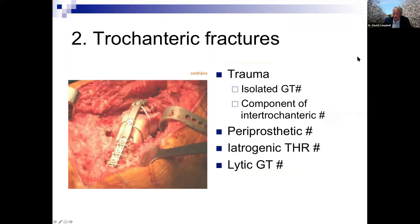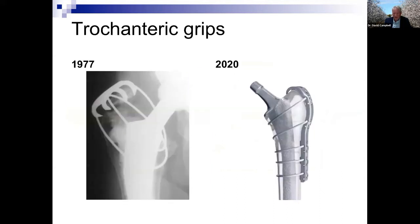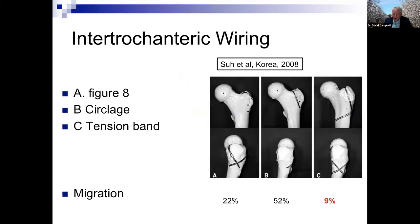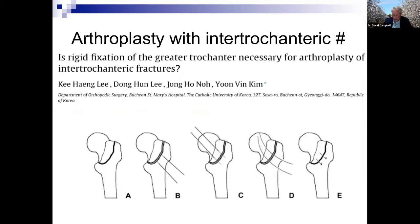Moving on to trochanteric fractures — touching on periprosthetic and iatrogenic ones. We're familiar with fixation of greater trochanter fractures as a component of intertrochanteric injury. Trochanteric grips have been a godsend — used almost universally for the past 30 years with modern devices offering more options. Looking at older literature from Korea comparing figure-eight wire to cerclage, the tension band wire is the clear winner and likely the optimum fixation. When managing intertrochanteric fractures, you don't necessarily need a grip; suturing the trochanter with Ethibond sutures works quite well.